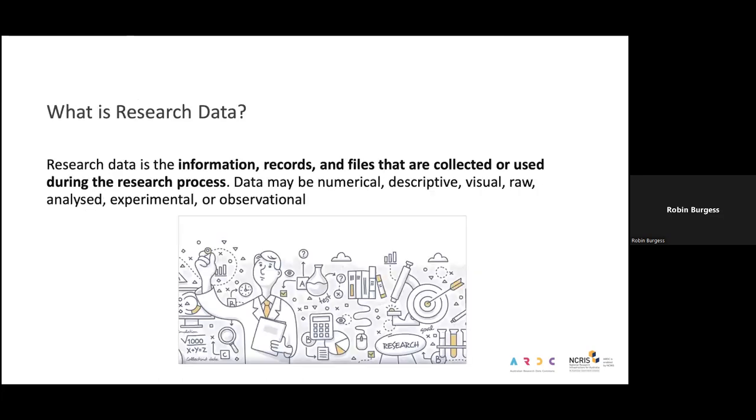The first thing I wanted to touch upon is the question: what is research data? This is actually a common question that comes up for researchers when they're thinking about their projects and understanding whether the data they are collecting can be classified as research data and how it should subsequently be managed, recorded, understanding the quality of it and the fairness of the data and how it could potentially be reused in the future. Research data primarily is information, records and files that are collected or used during the research process. Data may be numerical, descriptive, visual, raw, analyzed, experimental or observational.